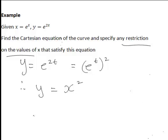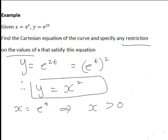But here looking at X equals e to the power of t, e to the power of t is always greater than 0. So that means that this will only be satisfied for X greater than 0.